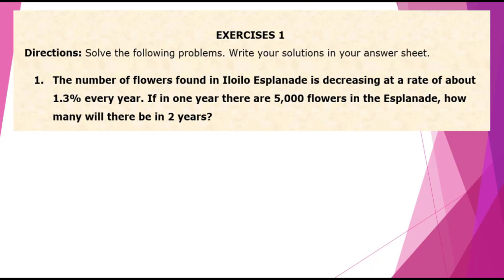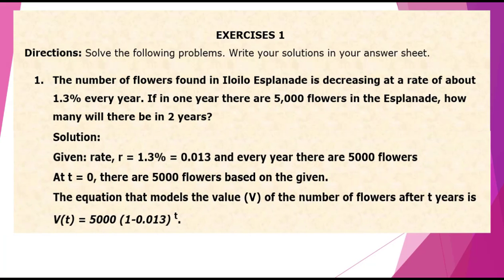Number 1. The number of flowers found in Iloilo Esplanade is decreasing at a rate of about 1.3% every year. If in one year there are 5,000 flowers in the Esplanade, how many will there be in two years?